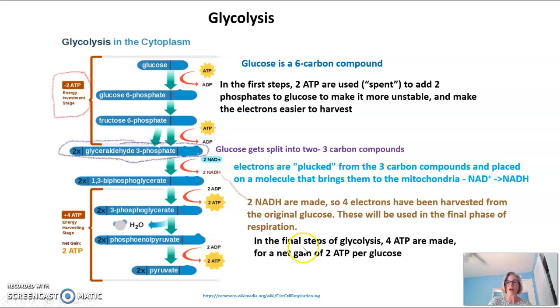In the final few steps of glycolysis, we do have ATP being made. So here we have two ADPs being made into two ATPs, two ADPs being made into two ATPs. So at the end of glycolysis, we have a net gain of two ATPs per every glucose. We made four, but we spent two. So the net gain was two ATPs per glucose.